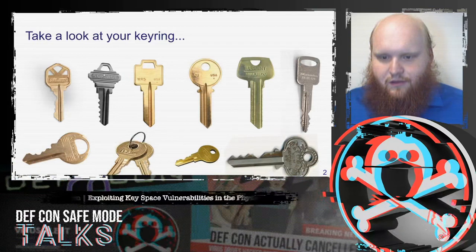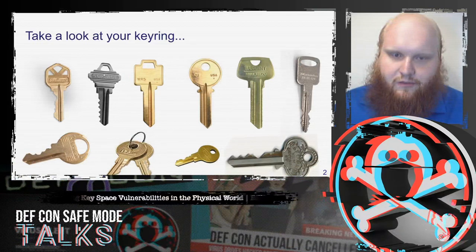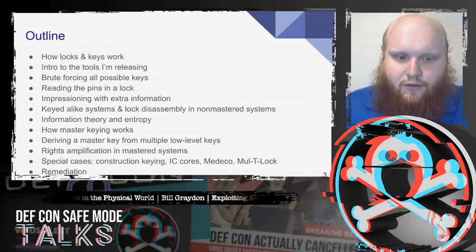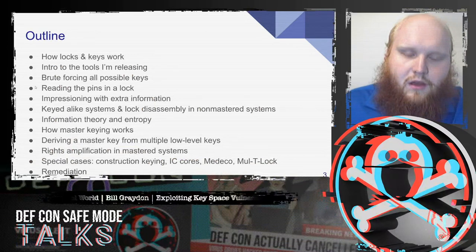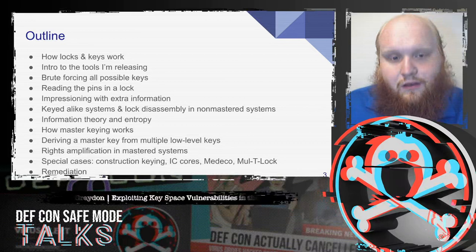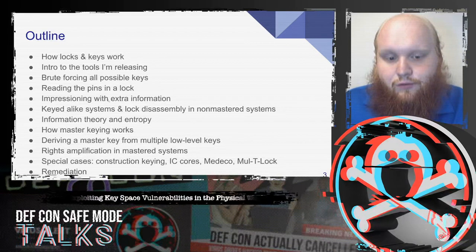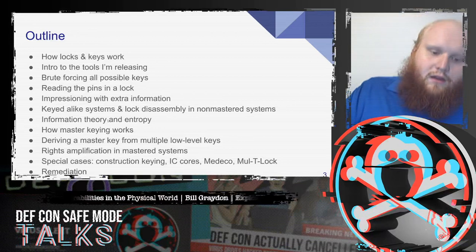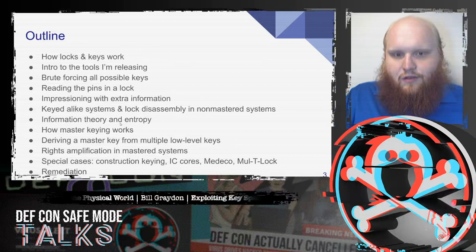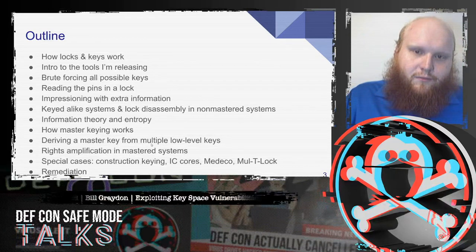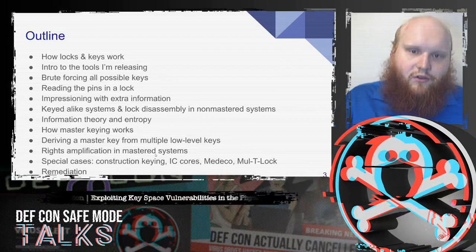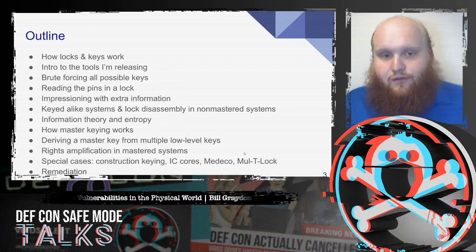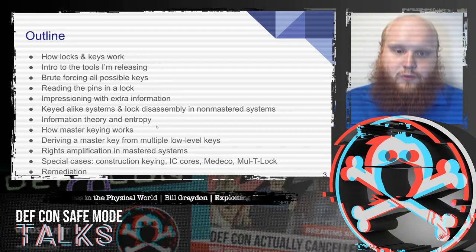Take a look at your key ring and see the keys on there — see how much you understand about what they are beyond just shapes of metal and how they interact with the lock. We're going to attack that by looking at how locks and keys work and introducing the tools I'm releasing to analyze them. We'll look at the economics and practicality of brute forcing all possible keys, reading the pins in a lock to get information, and improving on impressioning by applying extra information we have. We'll look at key-alike systems, lock disassembly, information theory, master keying systems, and special cases like construction keying, IC cores, and high security systems like Medeco and Multilock. Finally, we'll talk about what the blue team can do to remediate from these attacks.